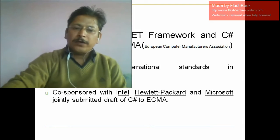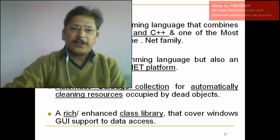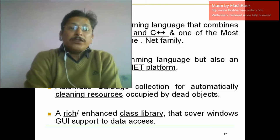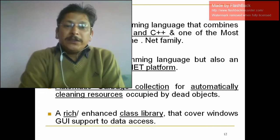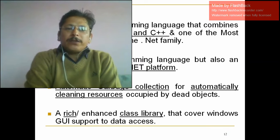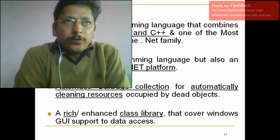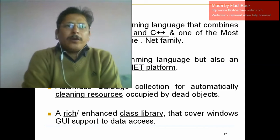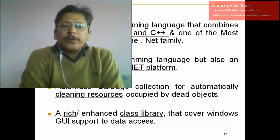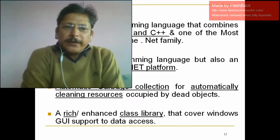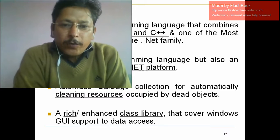C# is a new programming language which combines the features of C, C++, and Java. It has all the features of C, C++, and Java. It is the most efficient compiler of the .NET family. More than 50 languages can be executed in .NET framework, but C# is one of the biggest compilers of this family. C# is not only a programming language, but also an integral part of the .NET platform.